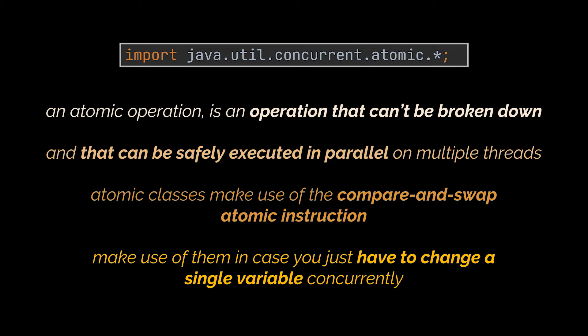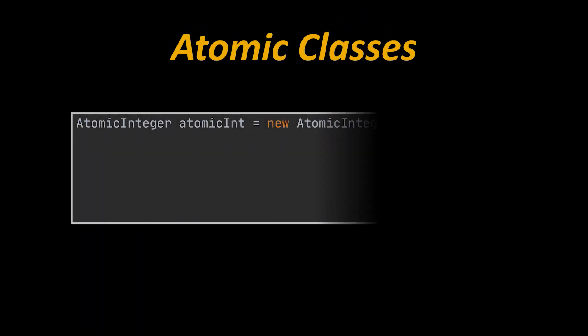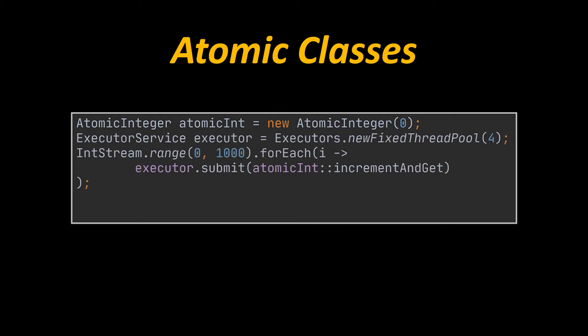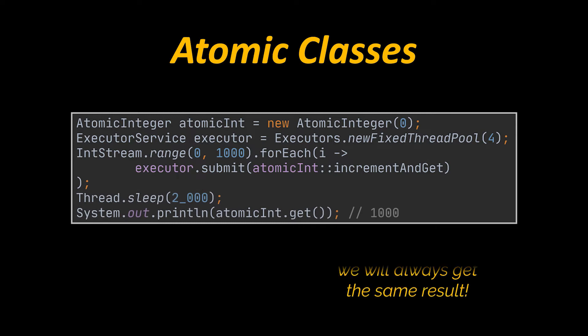Make use of atomic classes instead of locks when you just have to change a single mutable variable concurrently. For example, using AtomicInteger as a replacement for integer, we are able to increment a number concurrently in a thread-safe manner without synchronizing access to the variable. The method incrementAndGet is an atomic operation and can be called from multiple threads at the same time.